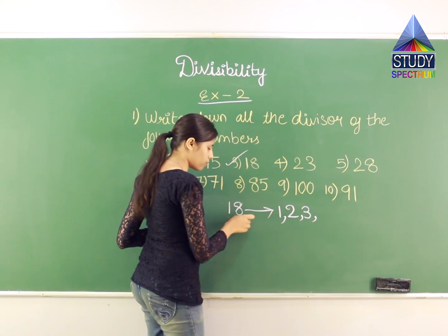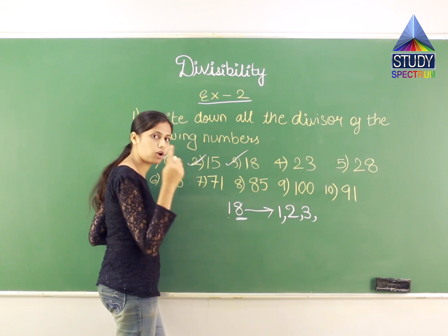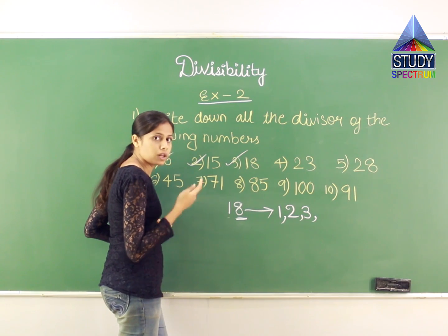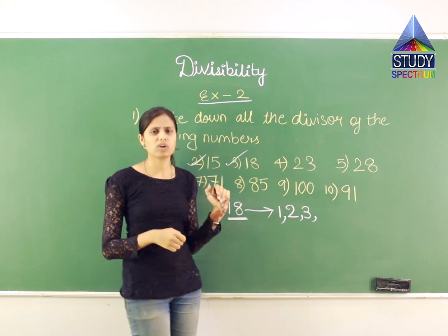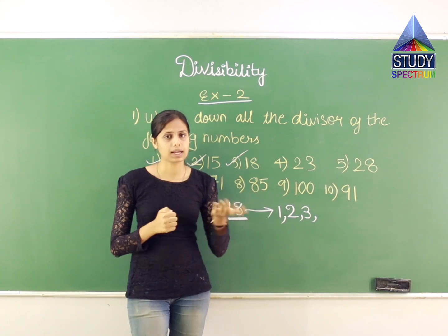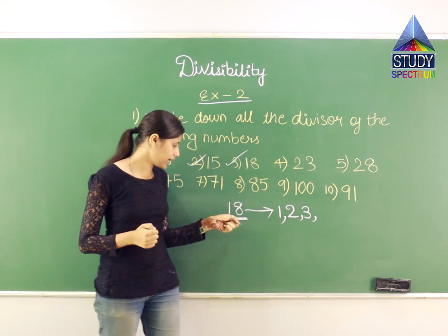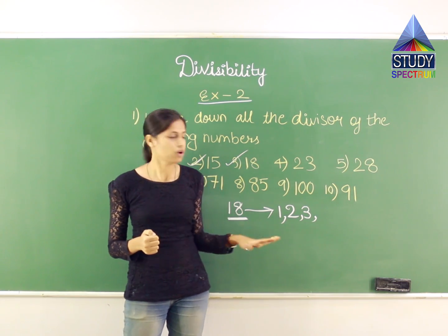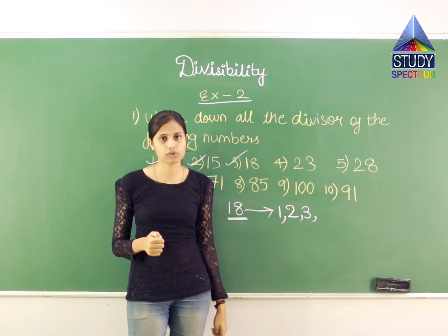Now let us talk about 4. For a number to be divisible by 4, the first step is to check whether the last digit is even or odd. Here I have 8, which is even. But is 18 divisible by 4? No — 4×4=16, 4×5=20 — I don't get 18. So 18 is not divisible by 4, meaning 4 is not a divisor for 18.